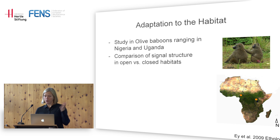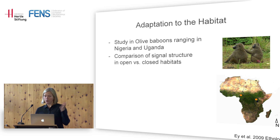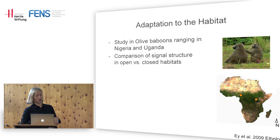Back to primates — it's not to say there is no variation whatsoever. There is substantial intra-individual variation that can sometimes be quite predictable. In a study on olive baboons in Nigeria and Uganda by my PhD student Elodie, she compared the structure of grunts when animals transitioned from an open habitat to a closed habitat with poor visibility.